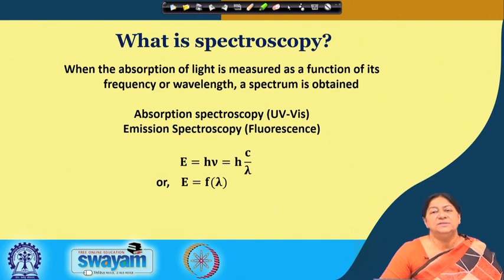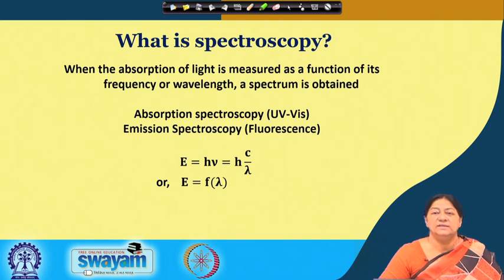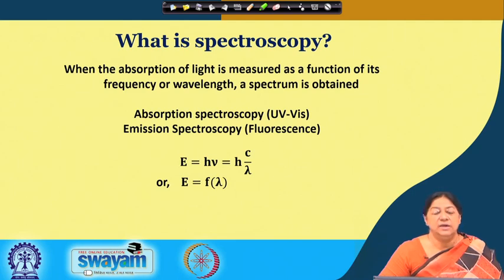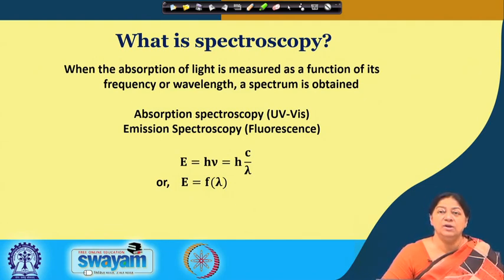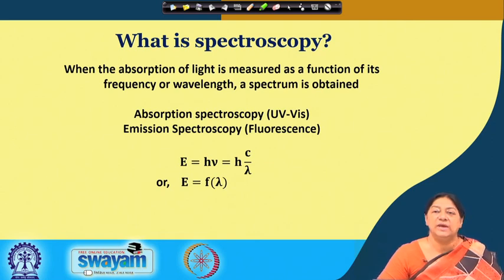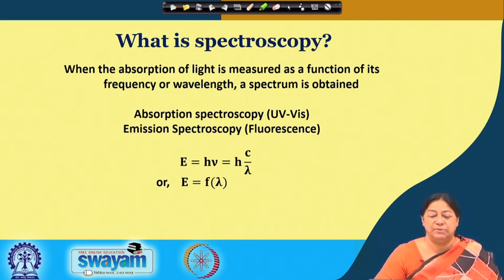When we consider spectroscopy, we have to understand that there is absorption of light. This light has energy that corresponds to a specific frequency and a specific wavelength. The equations we have are E equals h-nu, where nu is the frequency, or E equals h-c divided by lambda, where c is the velocity of light and lambda is the wavelength. This means the energy we have is a function of lambda.